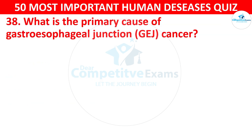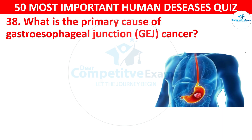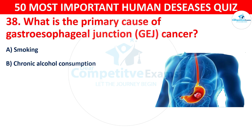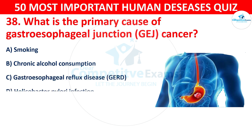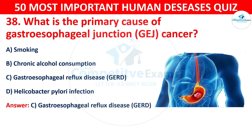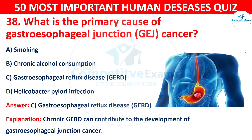Question 38: What is the primary cause of gastroesophageal junction (GEJ) cancer? The options are: A) Smoking, B) Chronic alcohol consumption, C) Gastroesophageal reflux disease (GERD), or D) Helicobacter pylori infection. The correct answer is C — GERD. Chronic GERD can contribute to the development of gastroesophageal junction cancer.